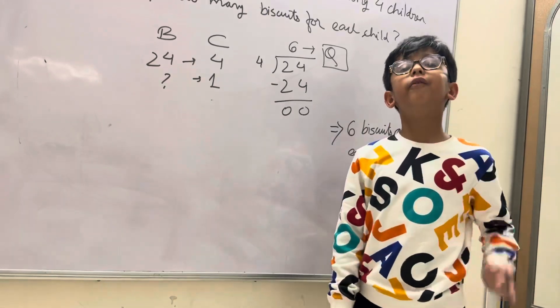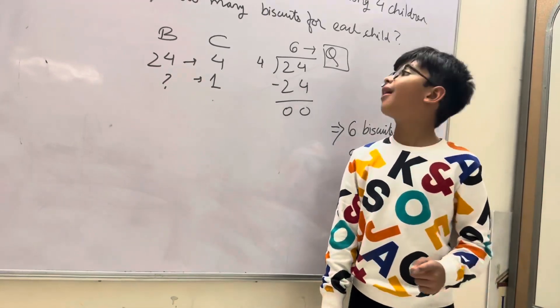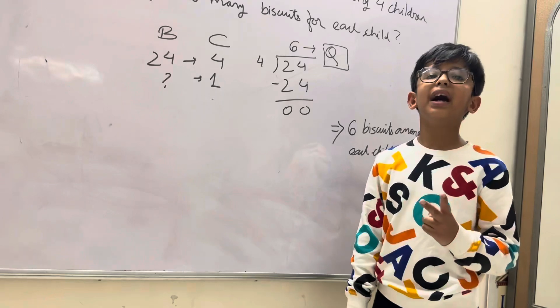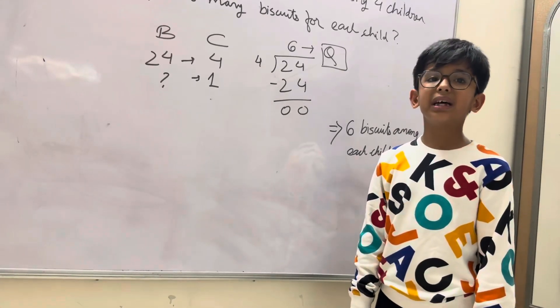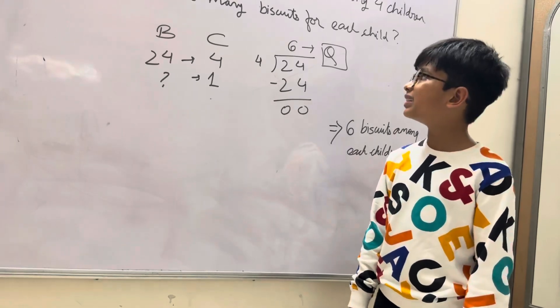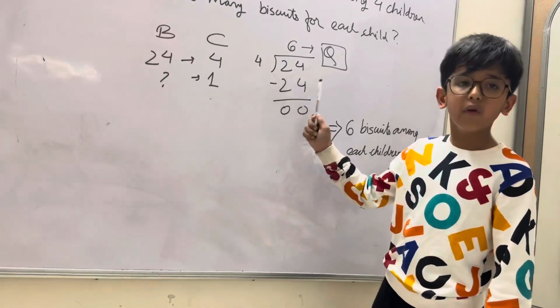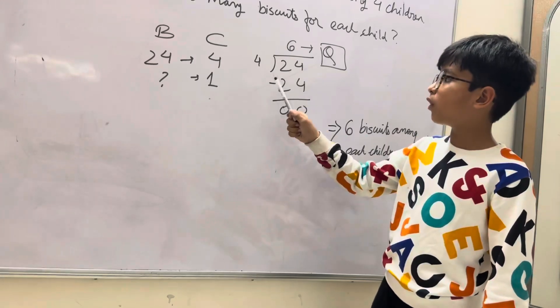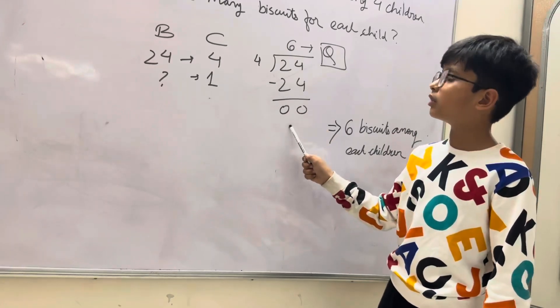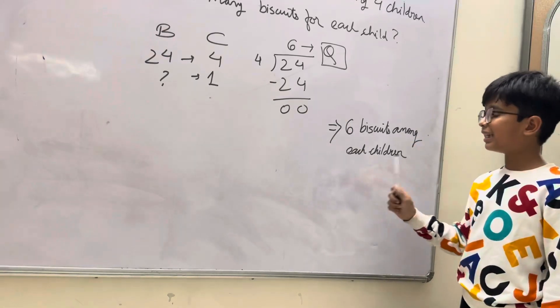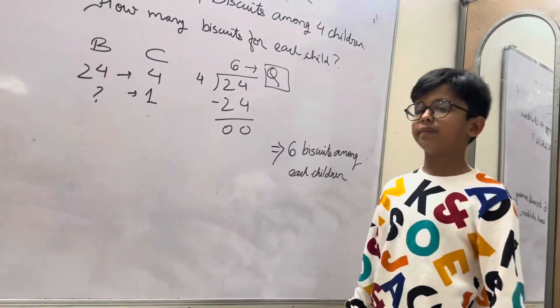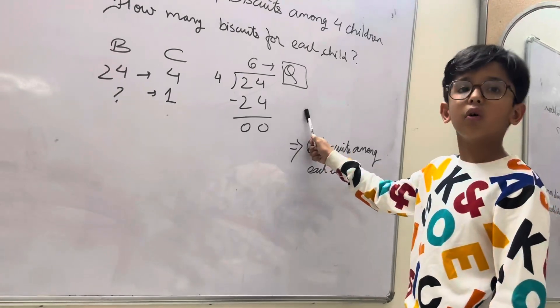So we start with the 4 table. 4 ones are 4, 4 twos are 8, 4 threes are 12, 4 fours are 16, 4 fives are 20, 4 sixes are 24. So 4 sixes are 24 minus 24 is equal to 0. So 6 biscuits for each child. 6 is the quotient.